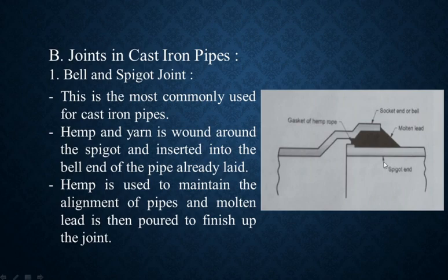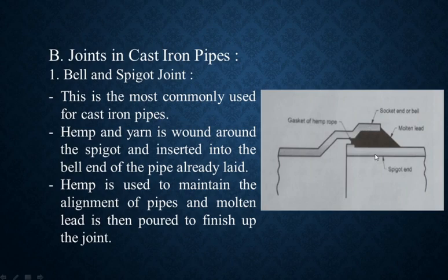With the spigot end, we wound hemp or yarn around it. The spigot end is inserted into the bell end, but the gap is not yet fully sealed. So molten lead — lead in liquid form — is poured into the space between the bell and spigot ends to finish the joint tight and strong.